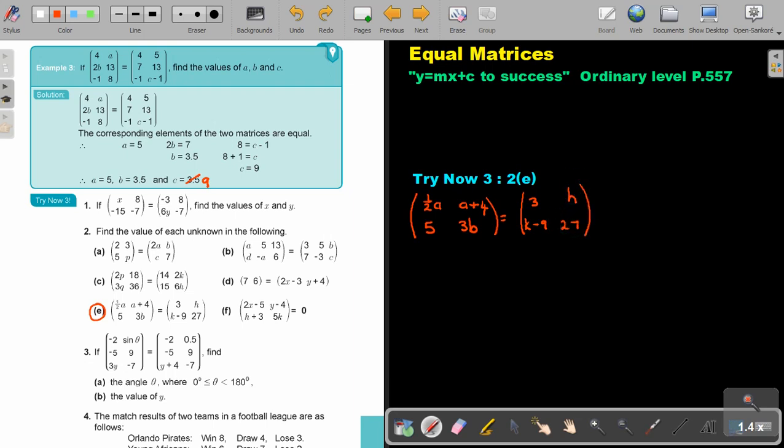And those two matrices are equal. So let's start. This one will be equal to this one. So basically, a half A will be equal to 3. It's better to first write down everything. A plus 4 will be equal to H.